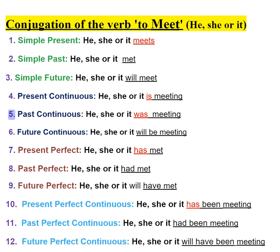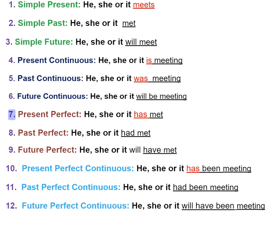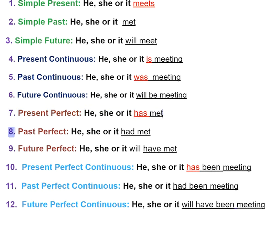5. Past continuous — he, she, or it was meeting. 6. Future continuous — he, she, or it will be meeting. 7. Present perfect — he, she, or it has met.